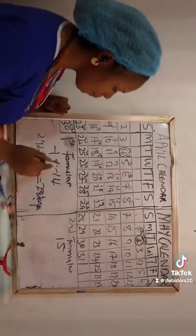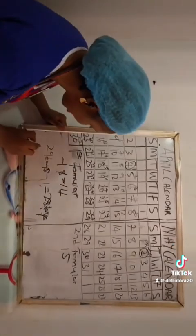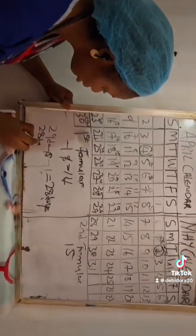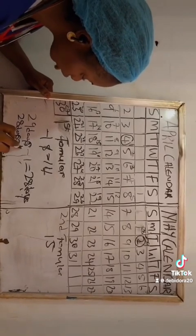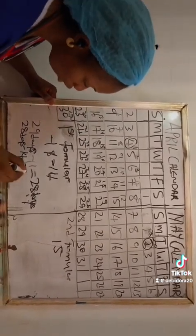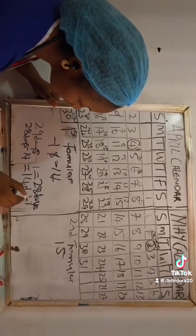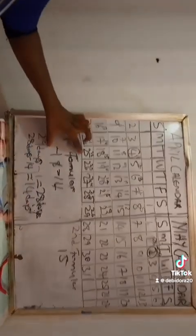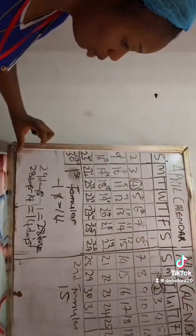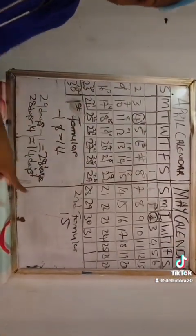Now take minus 14 away from those 28 days: 28 minus 14 gives you how many days? 14 days. This is formula 1. So by taking from the 4th of April down to the 2nd of May, formula 1 gives us 14 days. That is your ovulation calculation result.